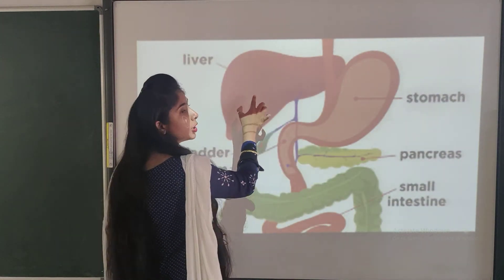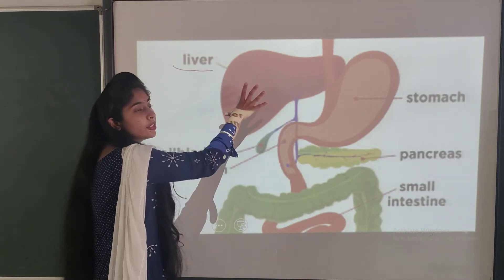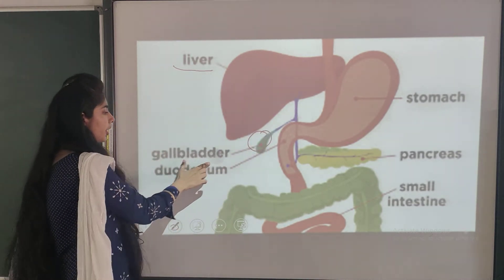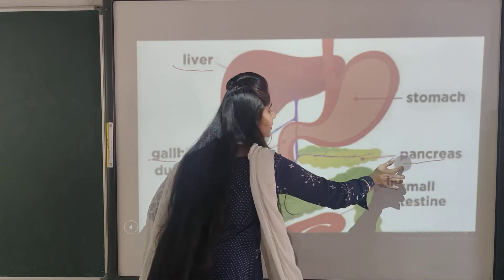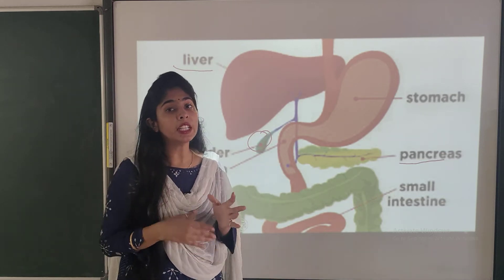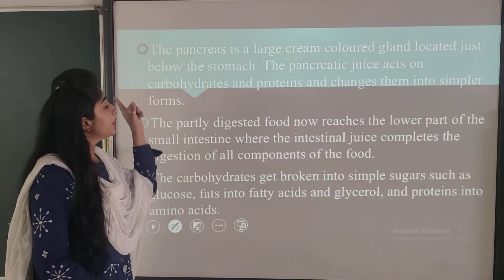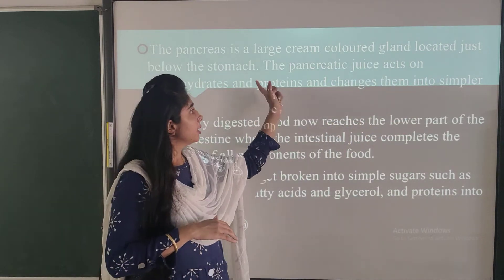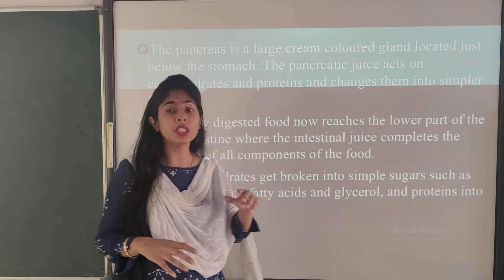The liver produces bile juice, which is stored in the pouch-like sac structure known as the gallbladder. Under the stomach, the pancreas is present, which produces pancreatic juices also useful for digestion. The pancreas is a large cream-colored gland located just below the stomach. The pancreatic juice acts on carbohydrates and proteins and changes them into simpler forms.